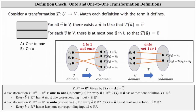This video goes over a definition check just to make sure we know the definitions of one-to-one and onto transformations. Sometimes when looking at different sources, the wording can be slightly different. We're asked to consider the transformation T from the vector space U to the vector space V, and we're asked to match the definition with the term. The two terms are one-to-one and onto.